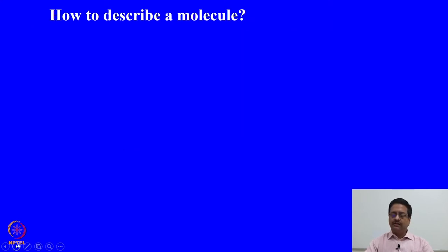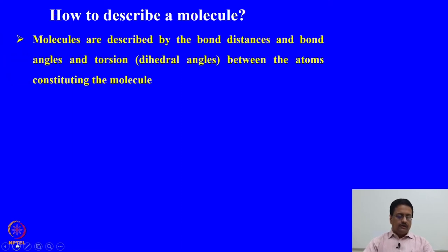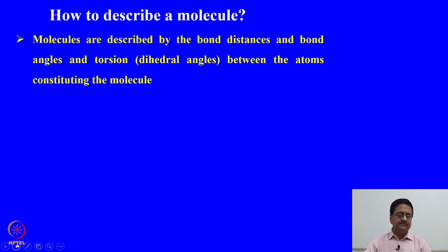The first question we would like to address is how to describe a molecule. Molecules are generally described by the bond distance, bond angles, and torsion angles — that is the dihedral angles — between the constituting atoms in the molecule. Once you know the bond angles, bond lengths and torsion angles of a molecule, we would also like to know how those atoms are oriented in space to know about their stereochemistry.